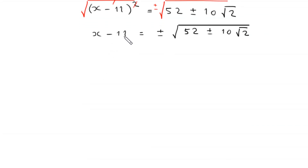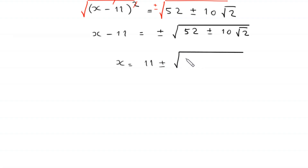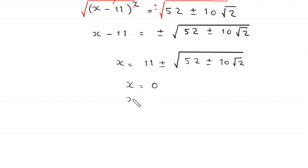We complete the square by adding 121: (x minus 11) squared equals 52 plus or minus 10 root 2. Taking square roots: x minus 11 equals plus or minus square root of (52 plus or minus 10 root 2), so x equals 11 plus or minus square root of (52 plus or minus 10 root 2). The final solutions are x equals 0, x equals 11, and x equals 11 plus or minus square root of (52 plus or minus 10 root 2).